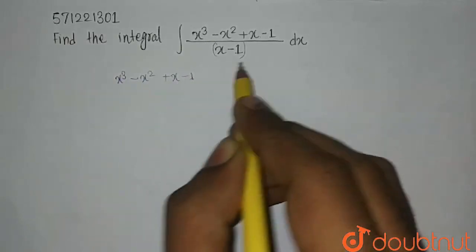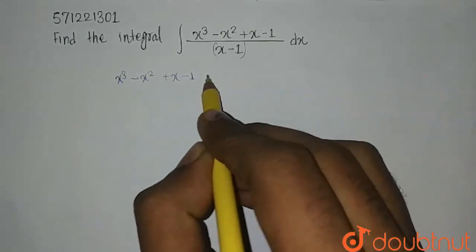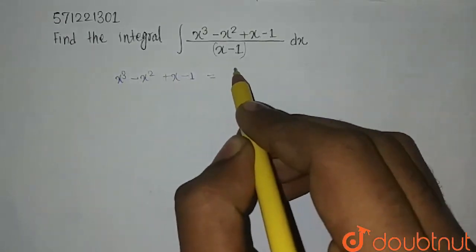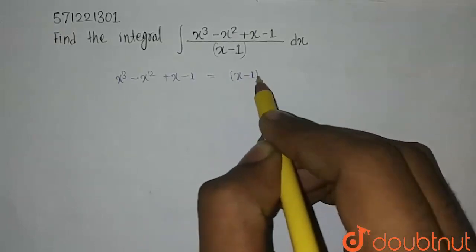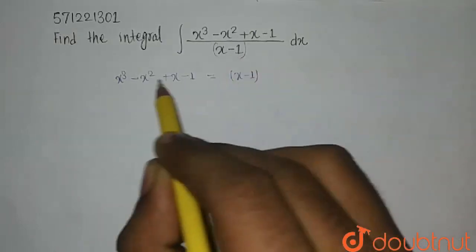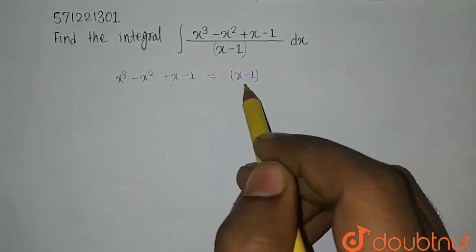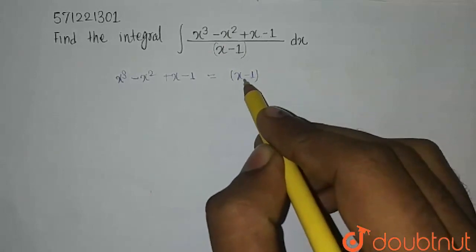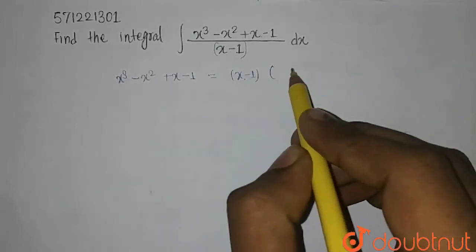So this numerator is given as x³ - x² + x - 1. And this can be written with (x - 1) as a factor, because we want this factor in the numerator so that numerator and denominator can get cancelled and it becomes easy to solve. So I have put this factor here. Now let's see what it will come.